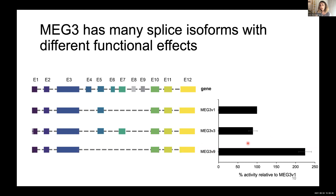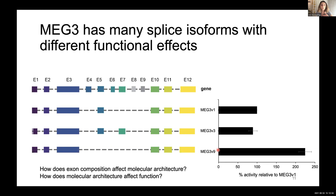Despite this minimal difference in exon composition, we see quite significant differences in terms of function, as shown in this reporter assay assessing the ability of these MEG3 splicing isoforms to promote p53-dependent gene expression from a reporter gene. This observation gives rise to the first question I've been trying to answer during my PhD: how does exon composition affect the molecular architecture of MEG3, and how does this architecture in turn affect its function?